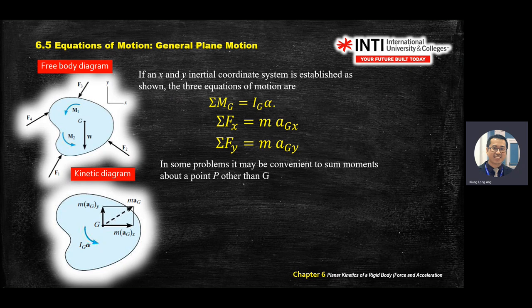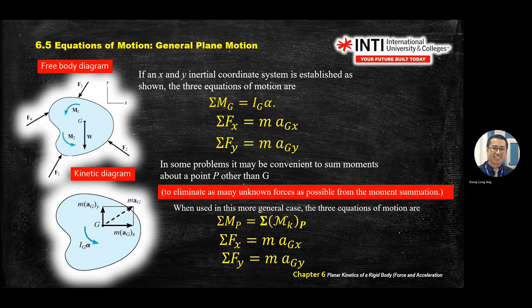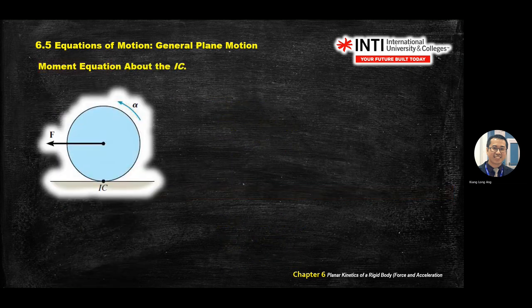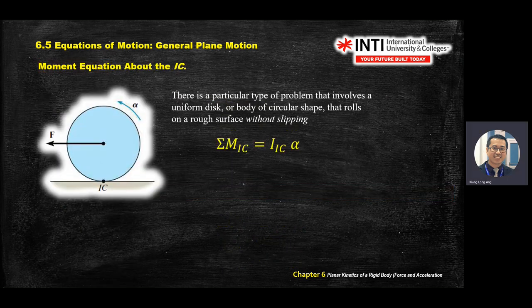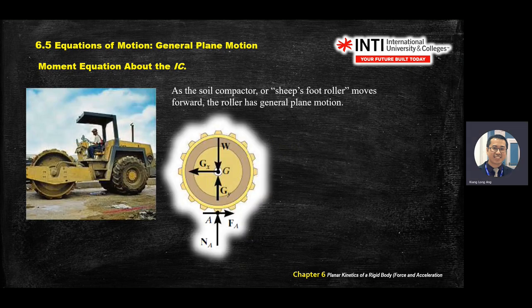You may also use the IC (instantaneous center) method — you use a zero velocity point and draw the velocity vectors. Draw the meeting point intersection, and you can also solve using M_IC equals I_IC times alpha. The same equation M equals I times alpha, but looking for the IC point.